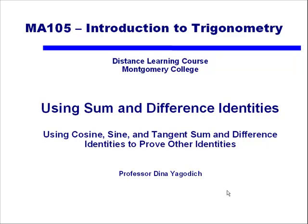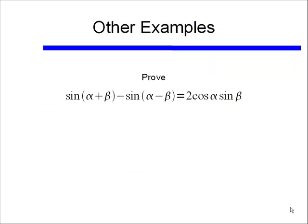This will be a quick video showing how we can use the sum and difference identities to help prove other identities. For example, if I give you a question such as prove sin(α+β) - sin(α-β) = 2cos(α)sin(β).